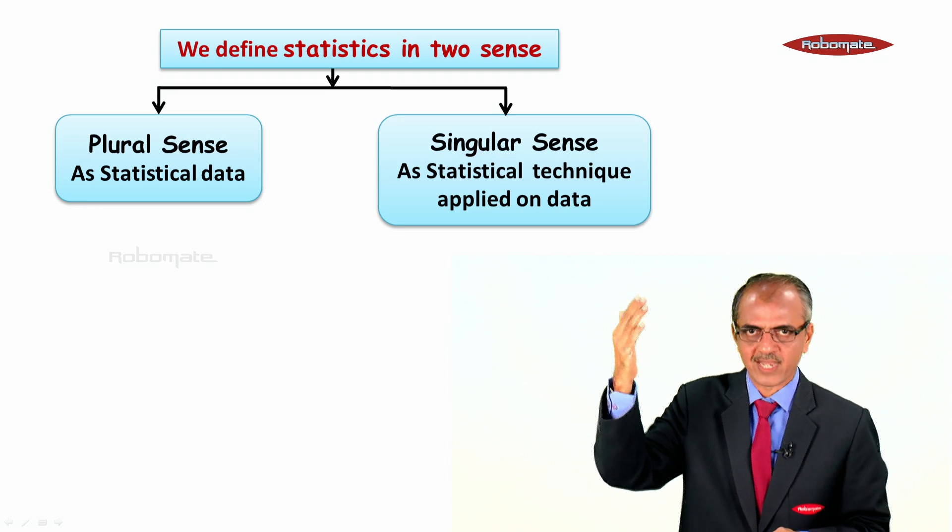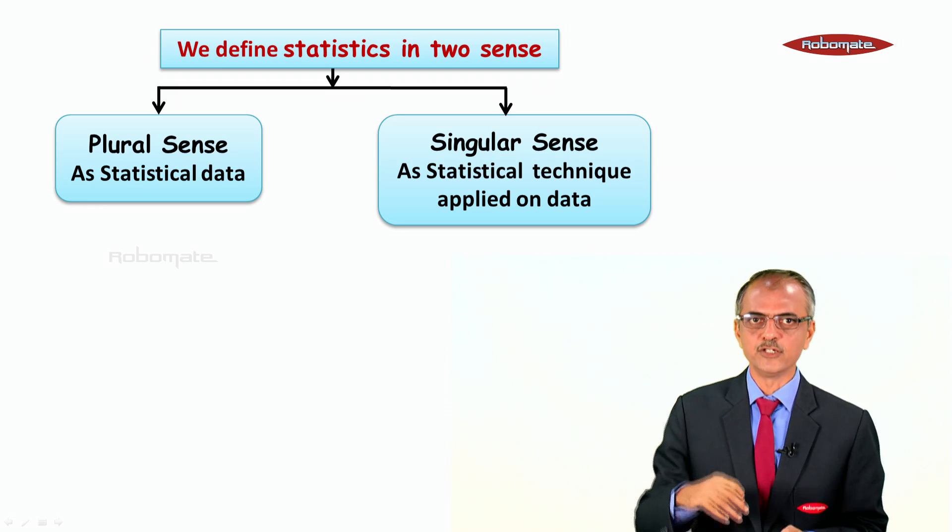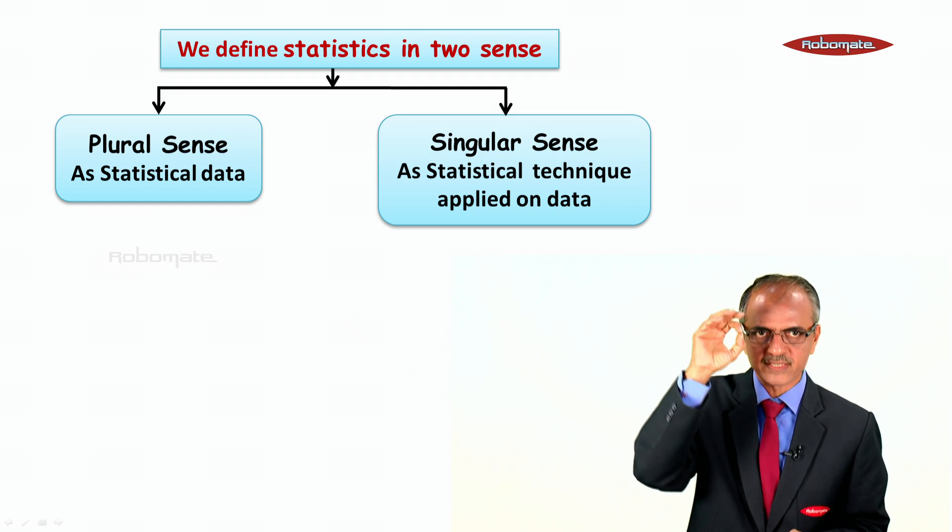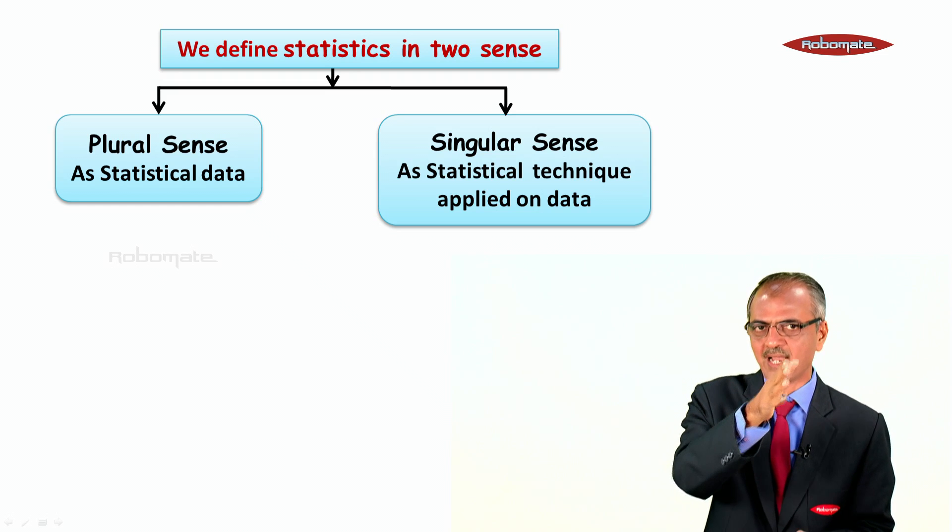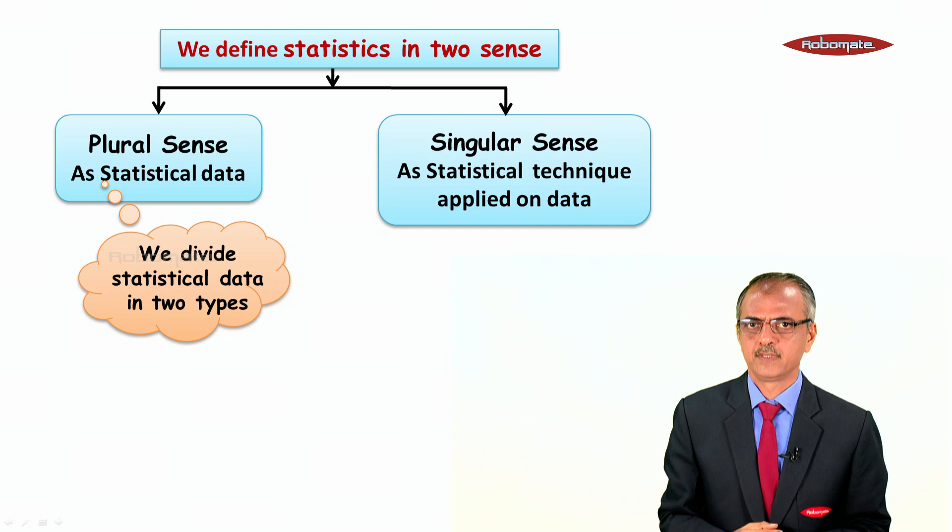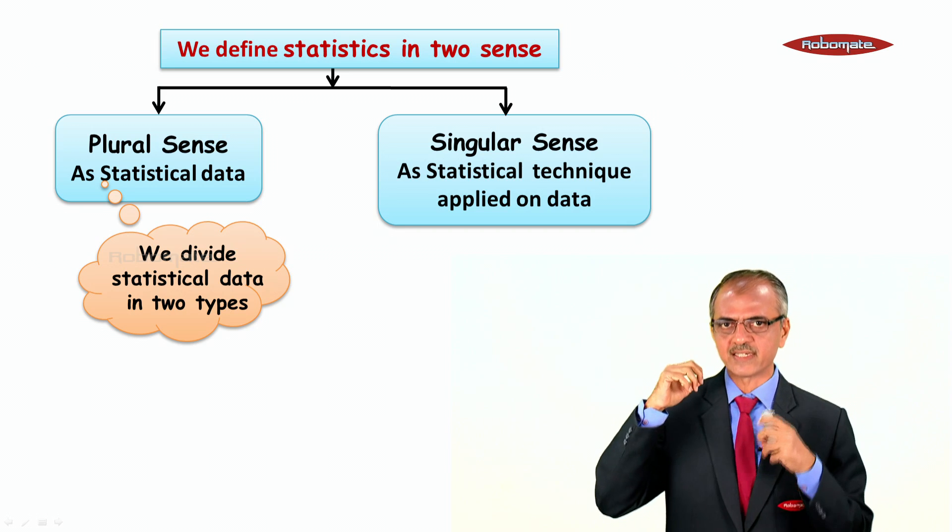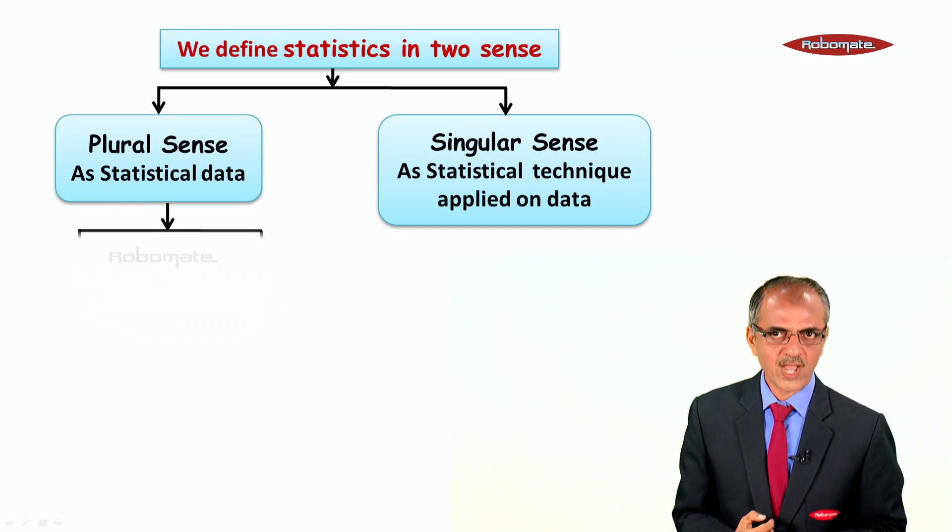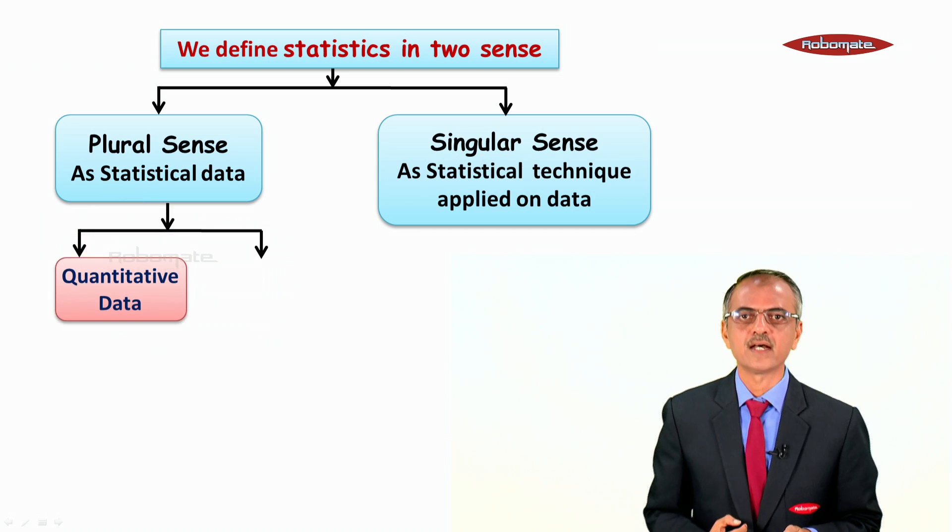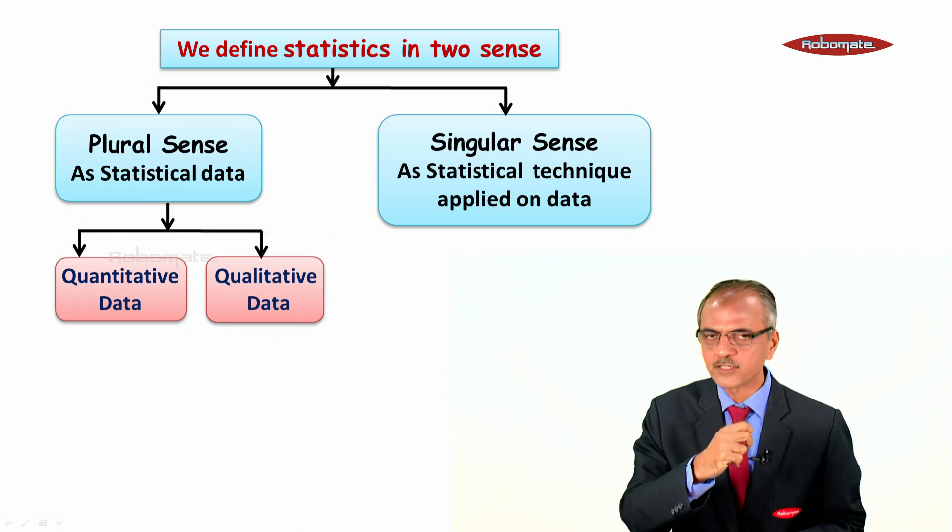In plural sense, it is defined as statistical data. In singular sense, it is defined as a statistical technique we apply on data. We divide statistical data into two types: one as quantitative data, another as qualitative data.